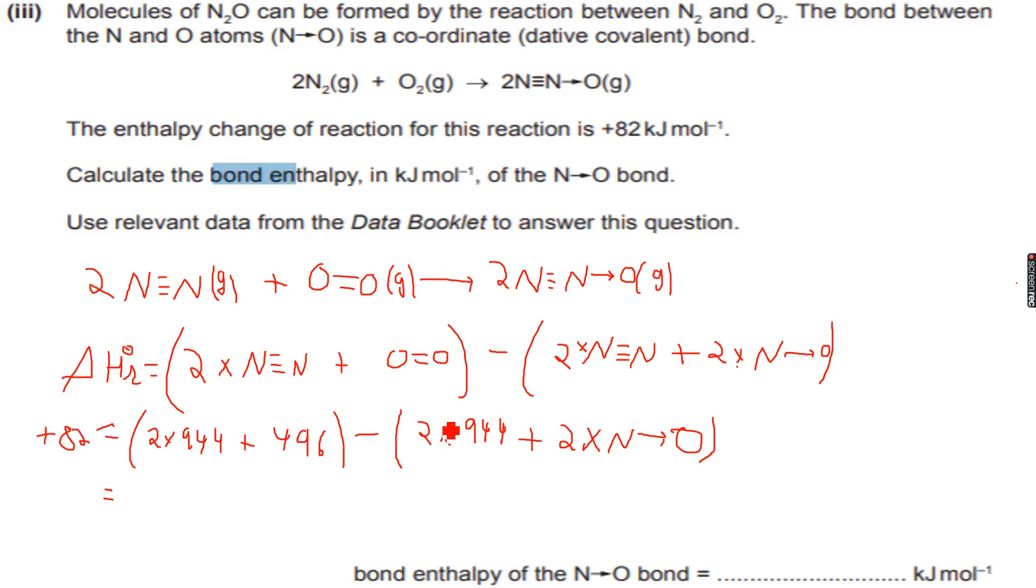2 times 944 plus 496 which is 2384 minus 2 times 944 minus 188. Let me correct my eights, they do not look like eights in any way. I'm really sorry for my bad handwriting. 188 plus...